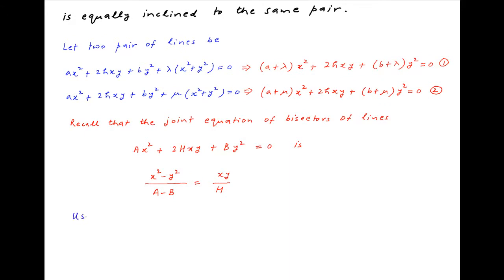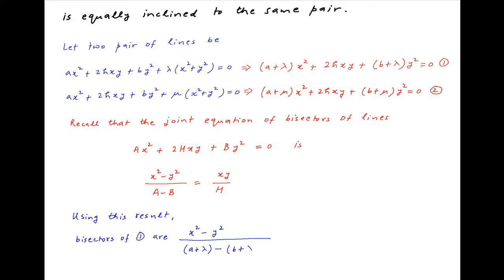Using this result, the joint equation of the bisectors of the pair of straight lines given by equation 1 is (x² − y²)/((a + λ) − (b + λ)) = xy/h. On the left-hand side in the denominator, λ cancels and the equation of the bisectors simplifies to (x² − y²)/(a − b) = xy/h. Let's denote this by equation 3.